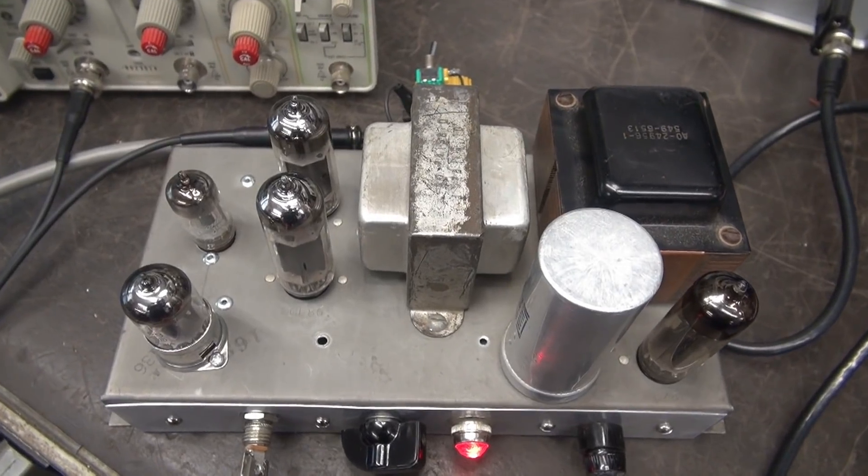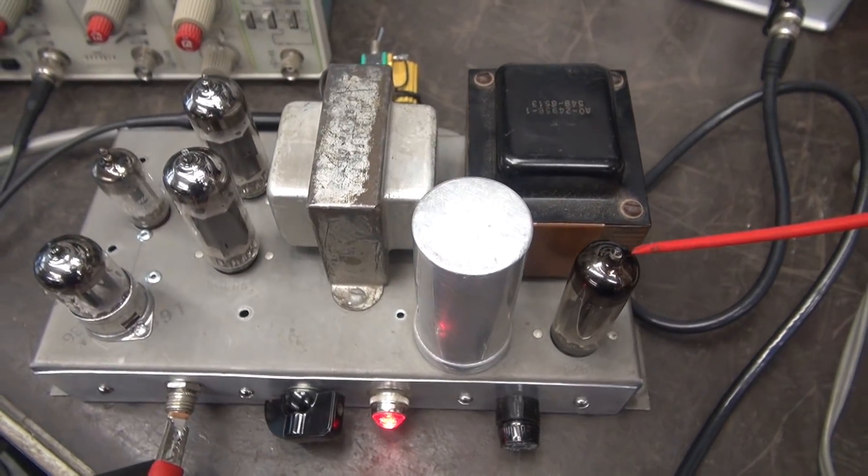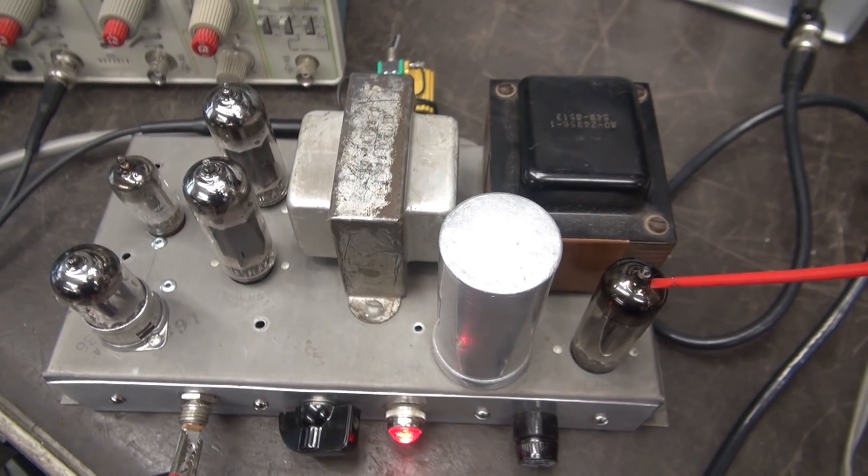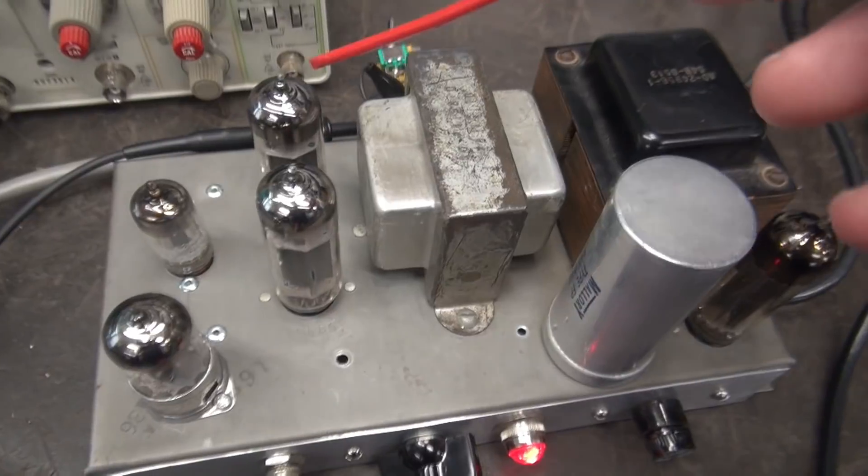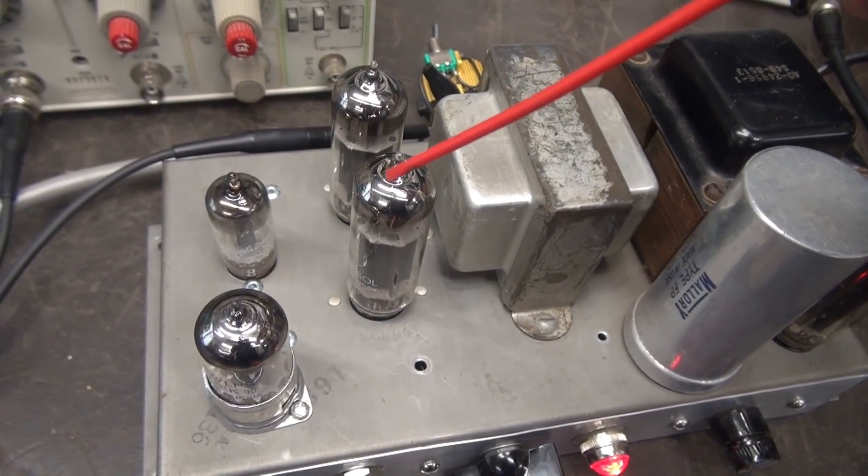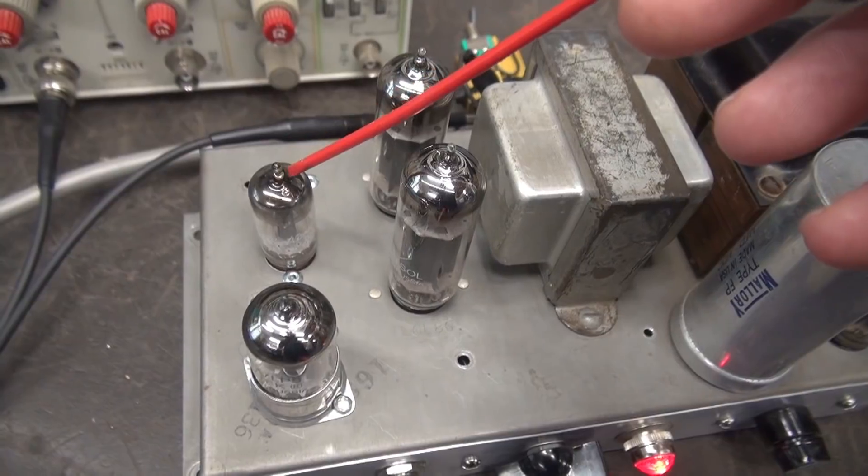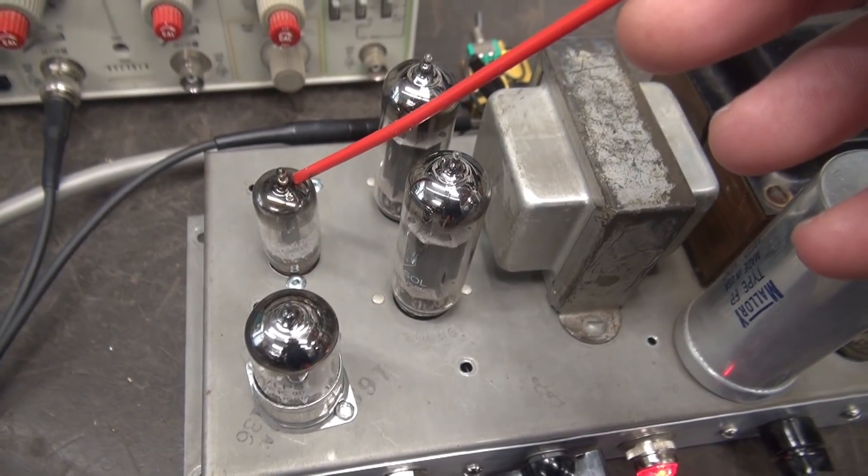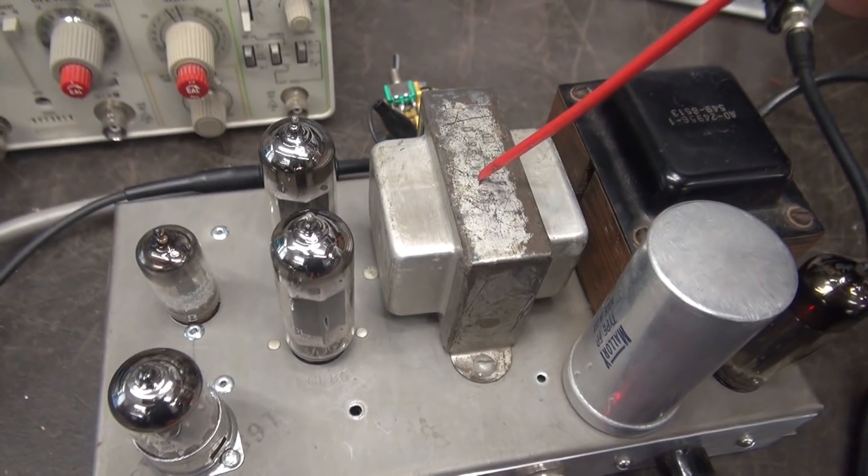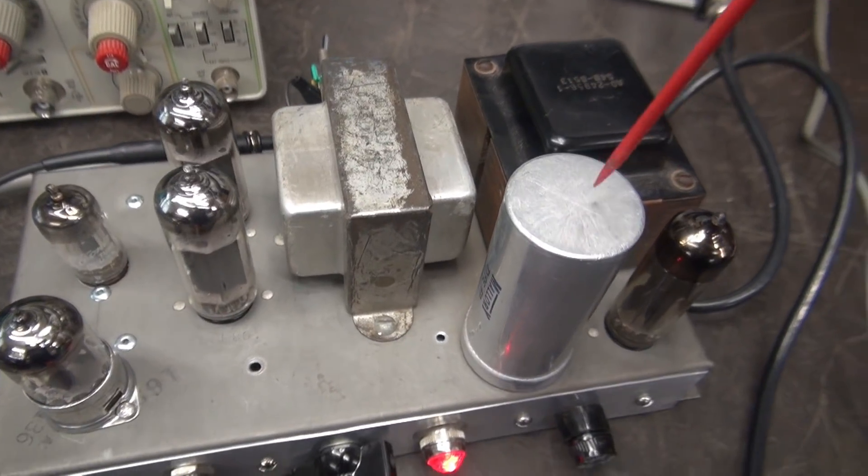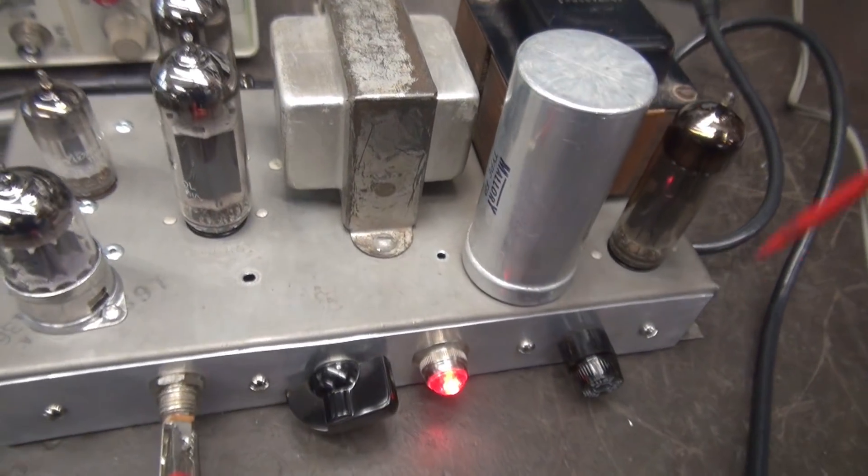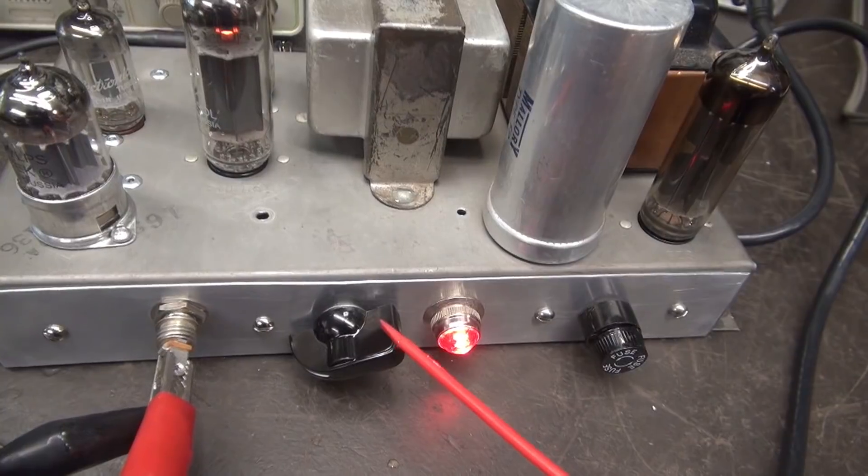Here's the final layout of the amp. Maintain the original 6CA4 rectifier. A pair of 6BQ5s, 12AX7 preamp, a little 6AV6 as the inverter. This is your output transformer, power transformer, and filter cap. Controls on this one is nothing more than volume.